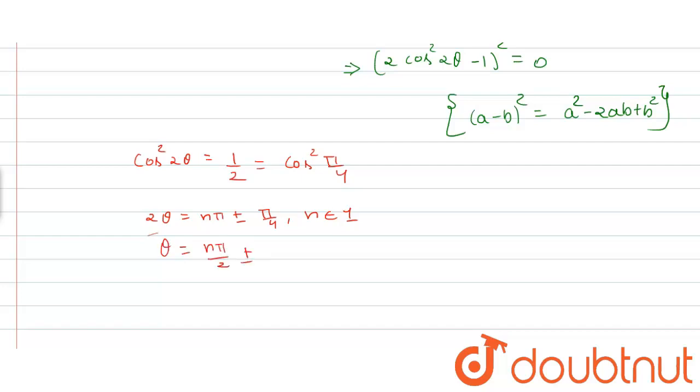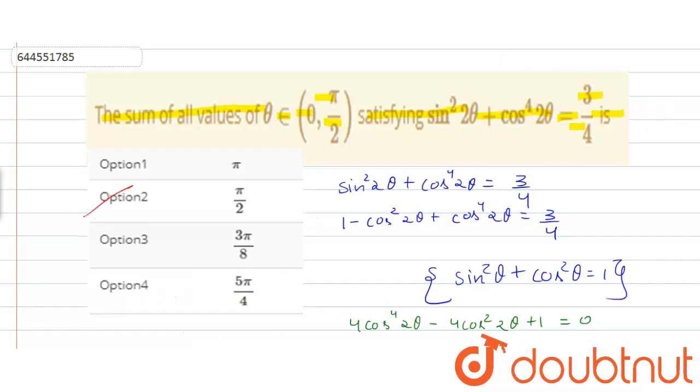Or we can say theta equals pi by 8, pi by 2 minus pi by 8. Therefore, sum of solutions is pi by 2. Hence, option 2 is correct.